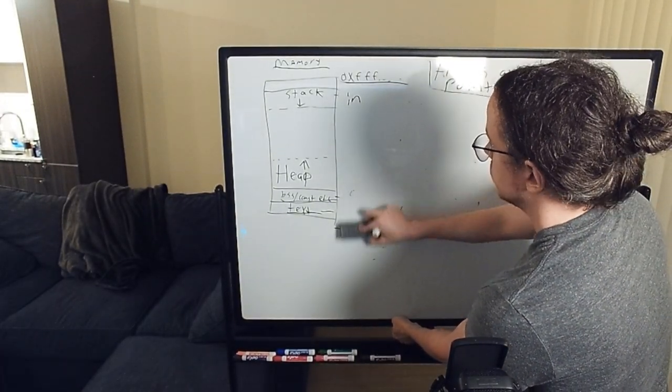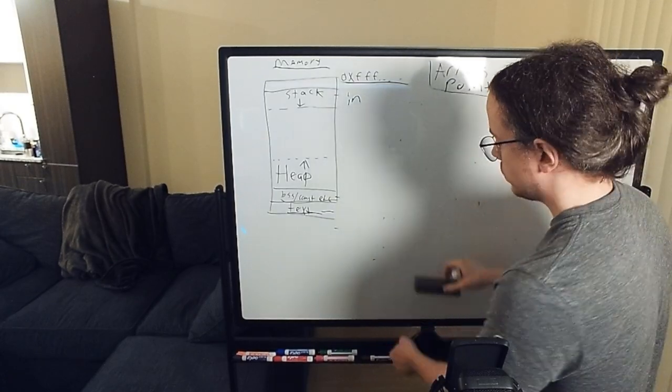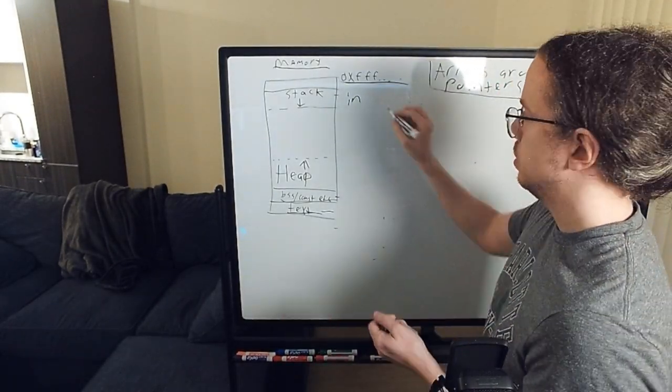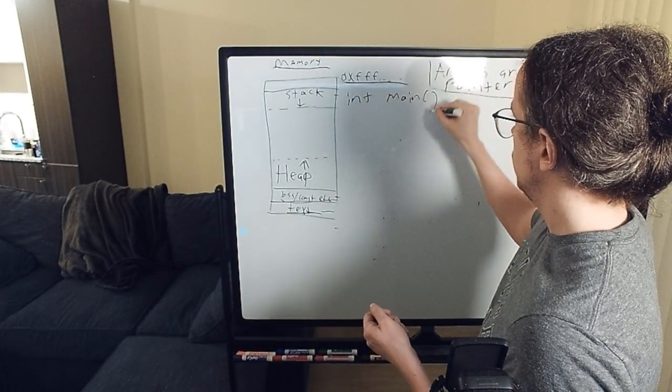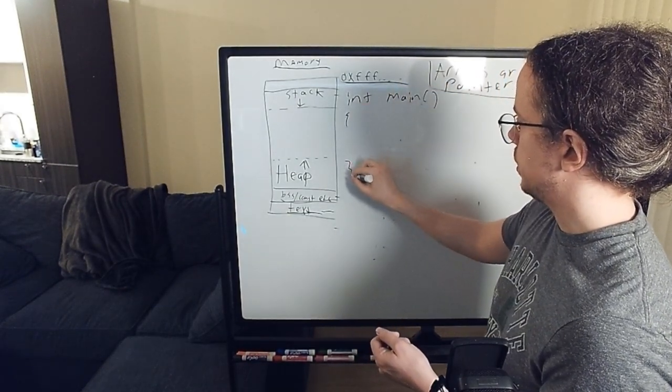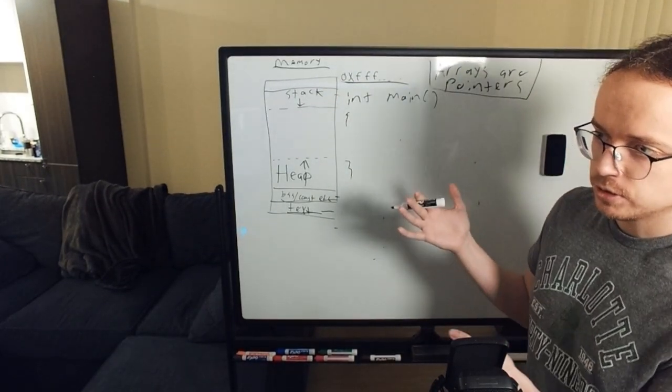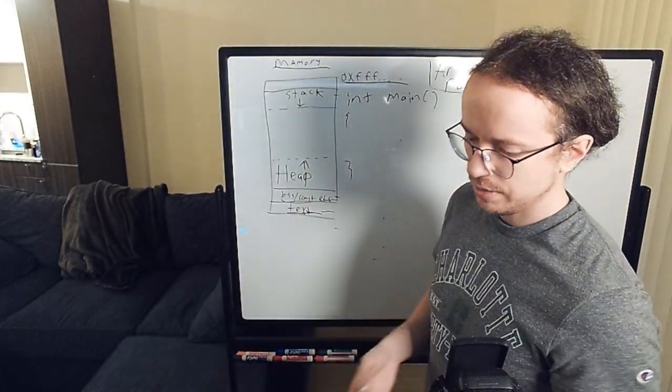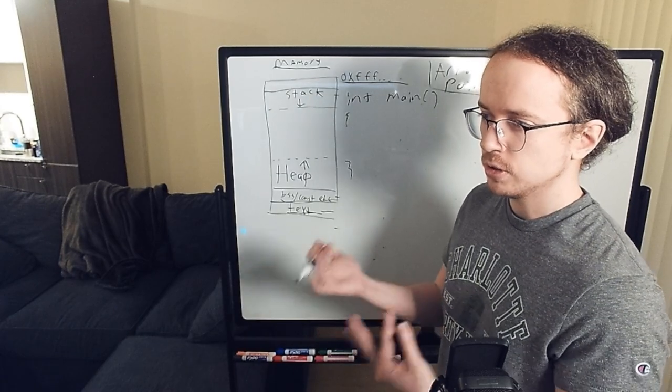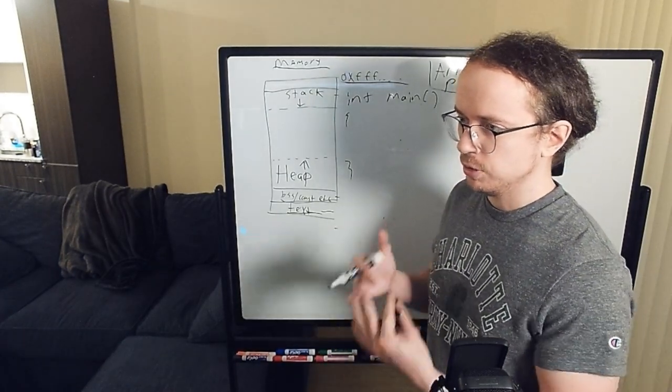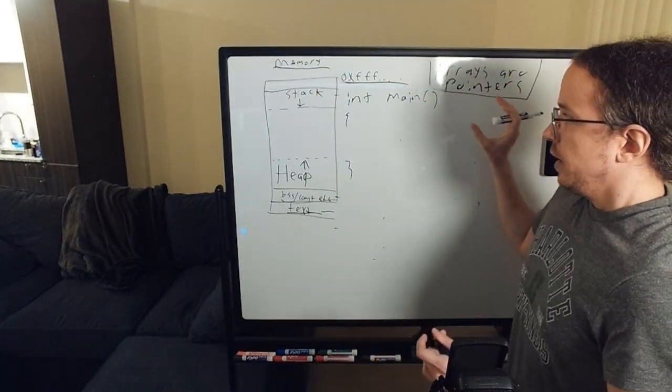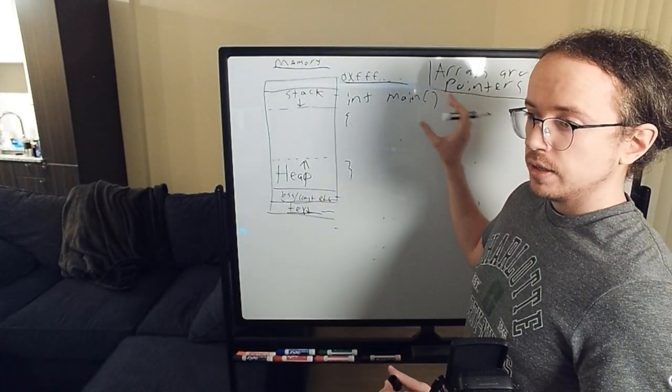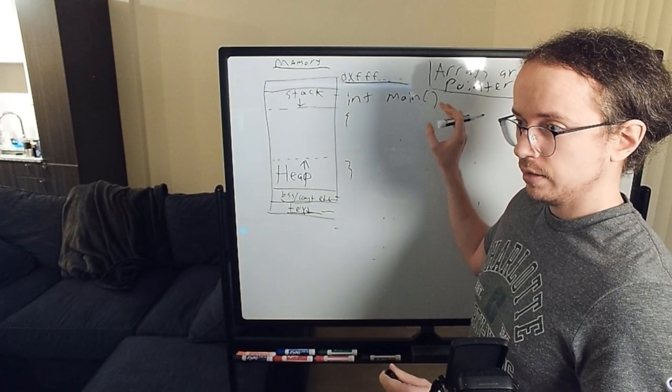But we're going to draw over it real quick. So in your code, you might have a function int main. Okay. Now this function is called implicitly when you start running your program. Something above your program is going to call main. Okay. Each function call gets a place on the stack.